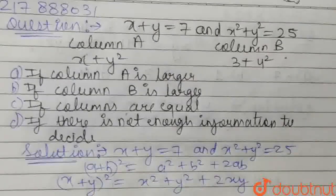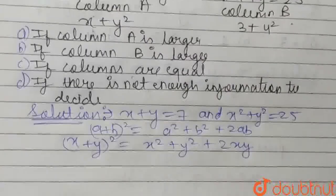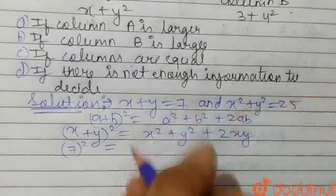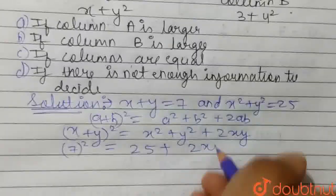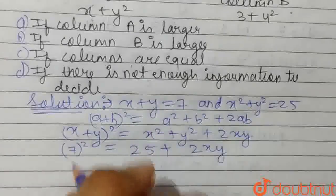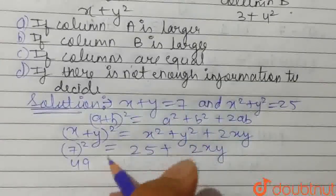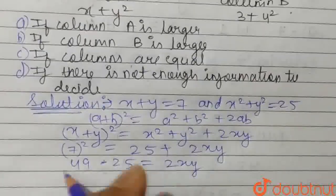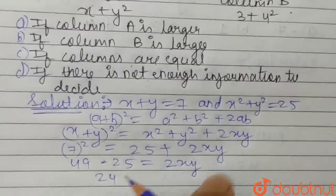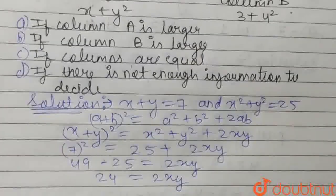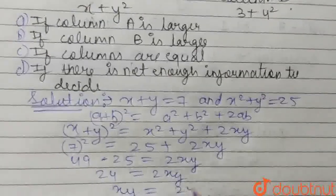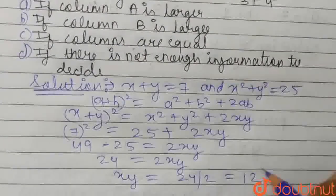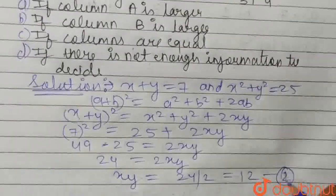The value of x plus y is 7, so just put here 7 squared. x squared plus y squared is 25 and 2xy. So 7 squared is 49, and we take 25 to the left-hand side: 49 minus 25 equals 2xy. By subtracting we get 24 equals 2xy, so xy equals 24 divided by 2, which is 12. So the value of xy is 12.